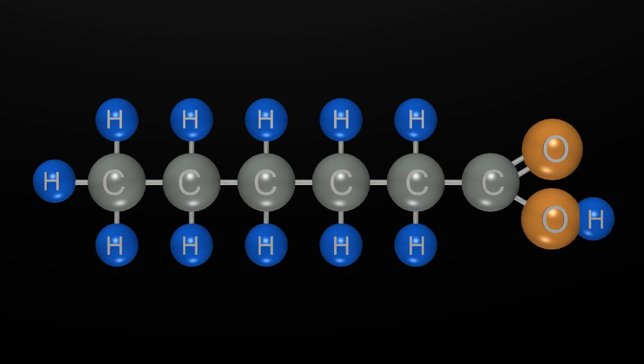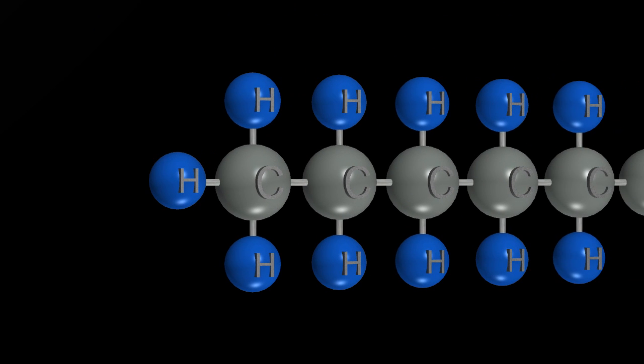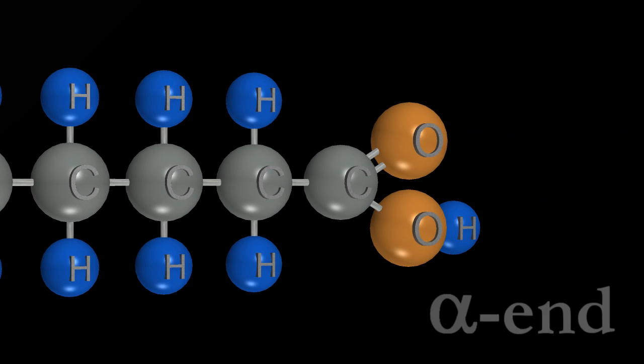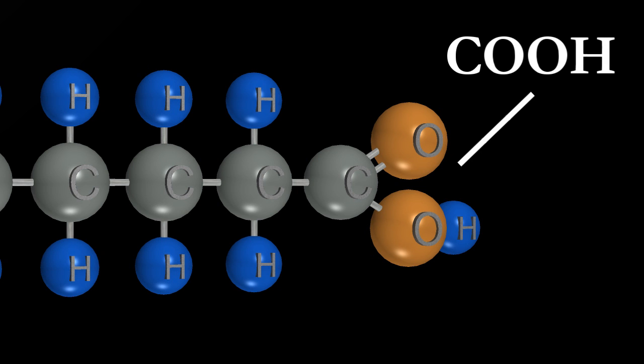In part 1, we looked at the free fatty acid and its elemental makeup. It consists of a carbon backbone with hydrogen atoms connected to the outside. Everywhere there was an available spot to attach an atom to the carbon, you could put a hydrogen atom. The only difference is on the alpha end of that chain, you had a carboxyl group.